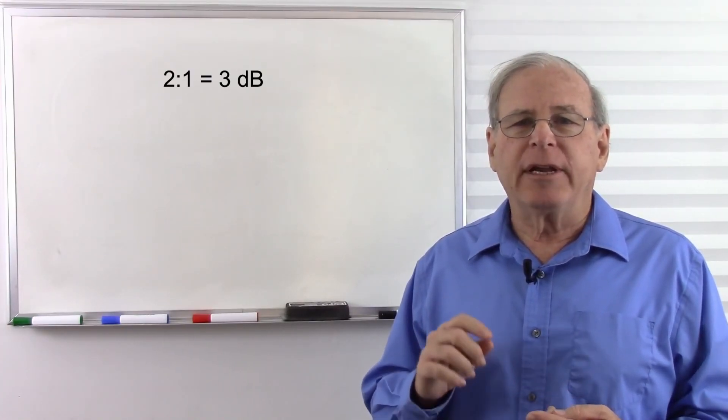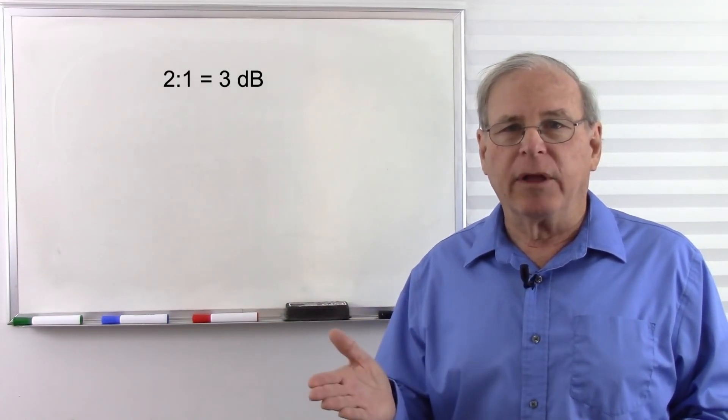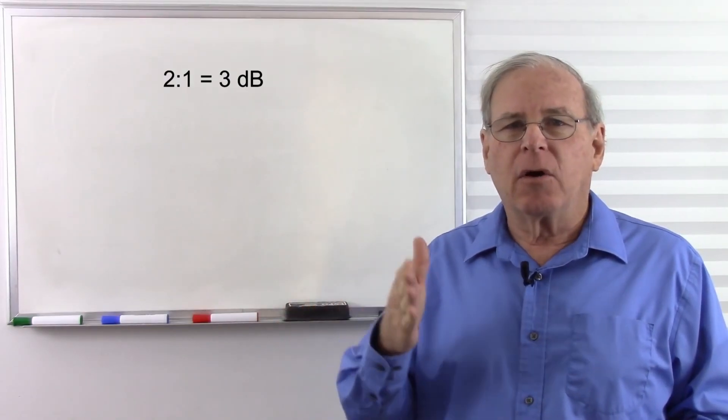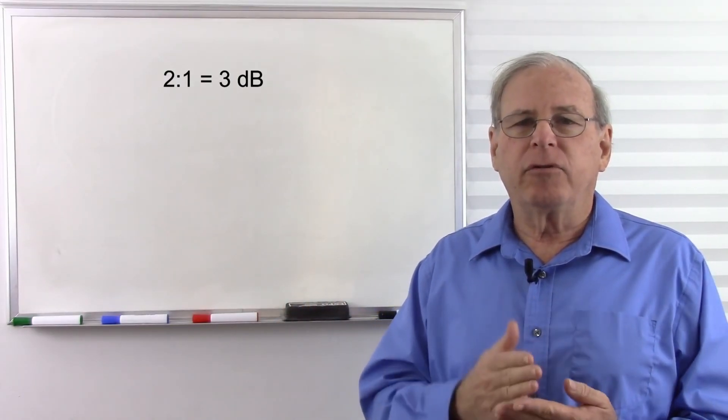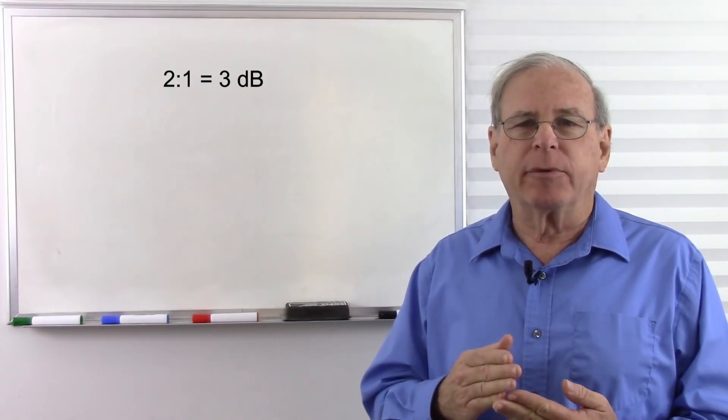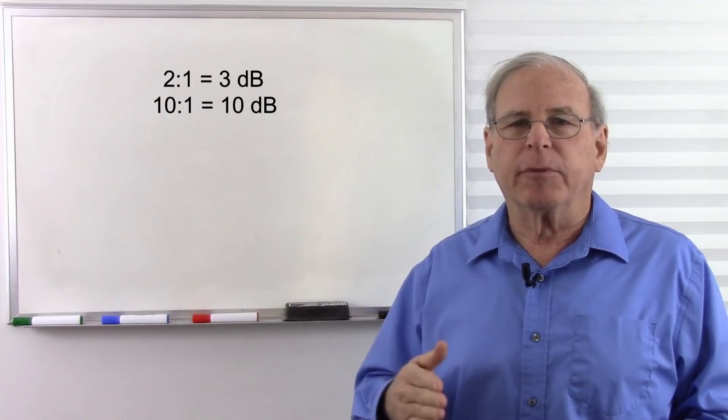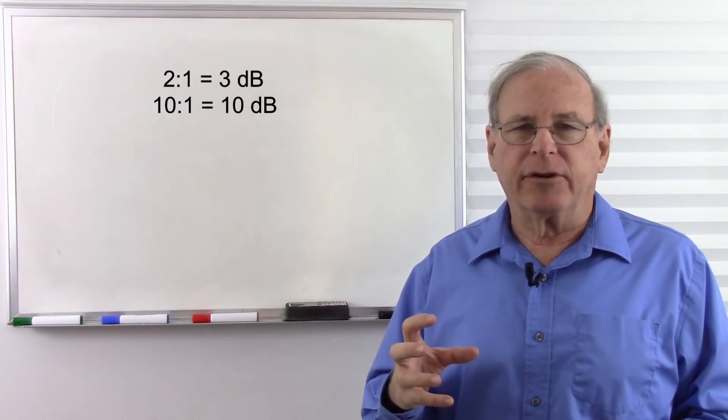So a change in 3 decibels is a doubling of power, or cutting the power in half. We can go either way. We can go up 3 decibels, which doubles the power, or go down 3 decibels, which cuts the power in half. So two important levels to know about are 3 decibels, which are doubling or cutting in half a 2 to 1 ratio, or 10 decibels, which is multiplying by 10, or dividing by 10, which is a 10 to 1 ratio.